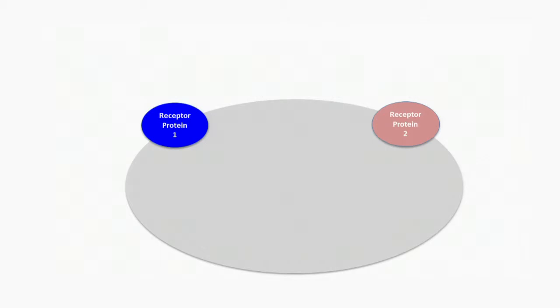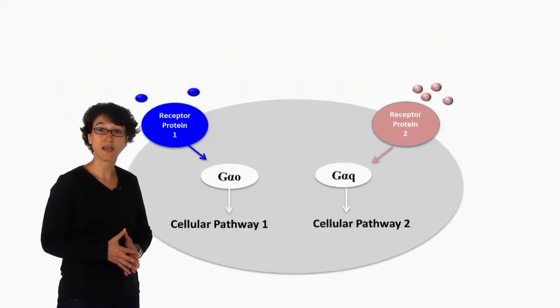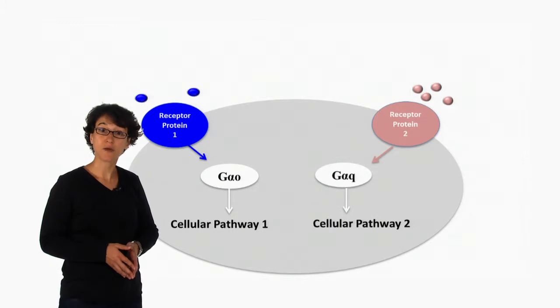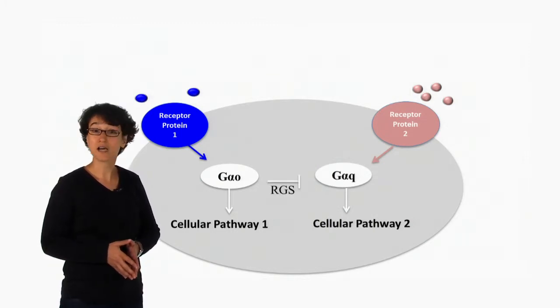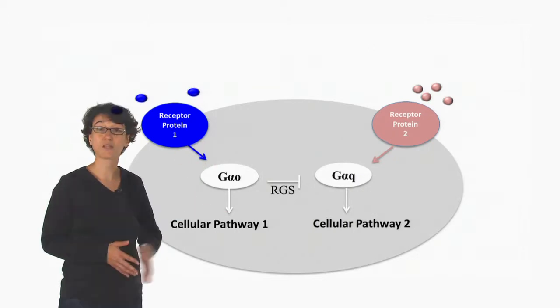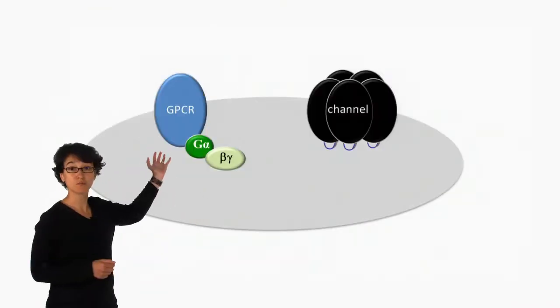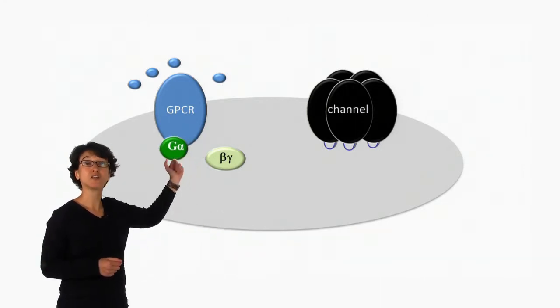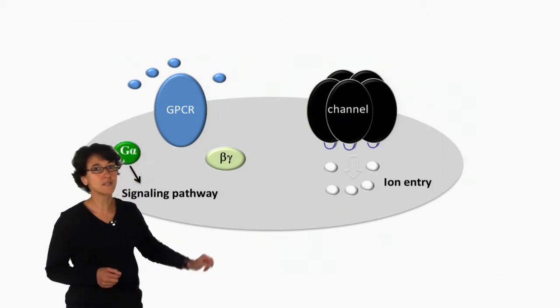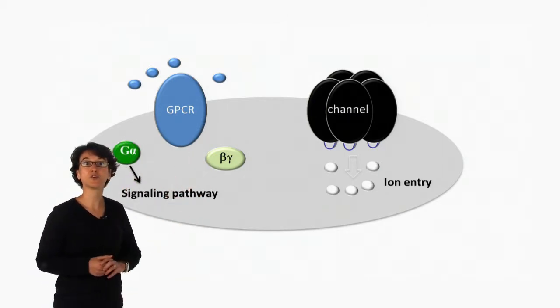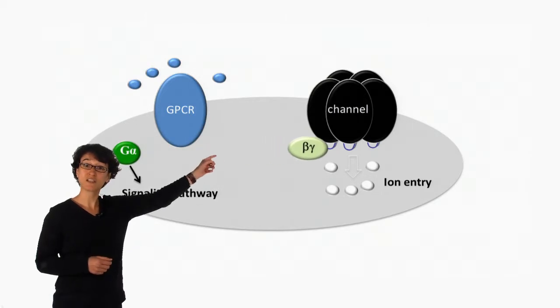Let's start off by considering the basic framework of G protein signaling by metabotropic receptors. Once activated by its ligand, a receptor protein can selectively activate a G protein pathway. A second receptor in the same cell can also selectively activate a G protein subunit and a signaling pathway. The two G protein pathways are often not exclusive and can interact with one another at various molecular levels. Now, let's consider the conventional scheme by which G protein-coupled receptors are believed to regulate ion channels in the cell. Ligand activation of the G protein-coupled receptor is thought to set into motion the disassociation of the heterotrimeric G protein complex, resulting in a downstream signaling event by the G-alpha subunit, and the G-beta-gamma subunit modulation of an adjacent ion channel.